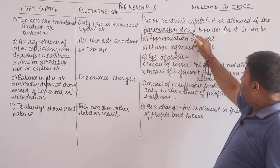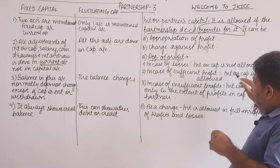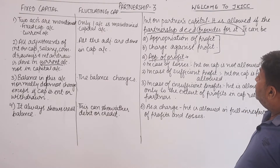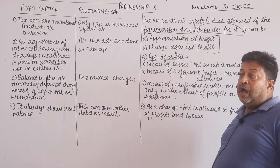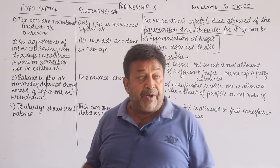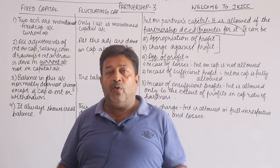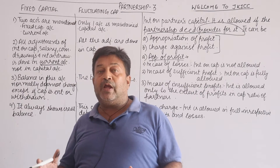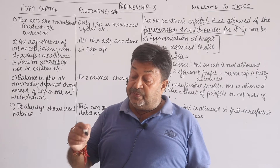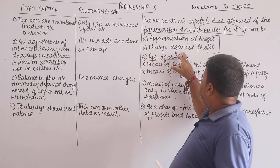Interest on capital is allowed only if it is specifically mentioned in the partnership deed. If there is no partnership deed, then interest on capital is not allowed. Now, this is a very interesting point: is interest on capital an appropriation of profit, or is it a charge against profit? There is a difference between appropriation and charge. Based on what is written in the partnership deed, we determine whether interest on capital is an appropriation of profit or a charge against profit.